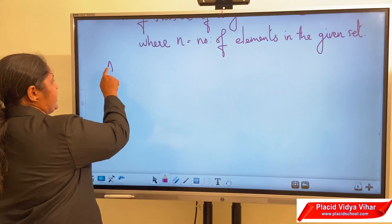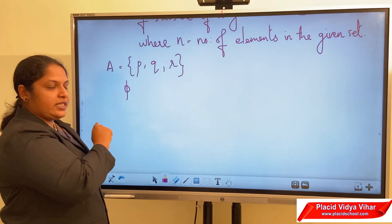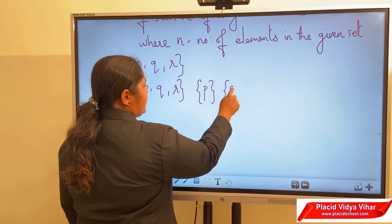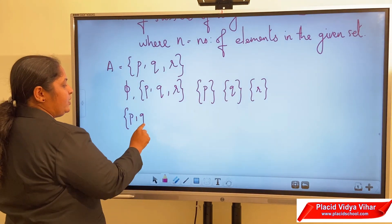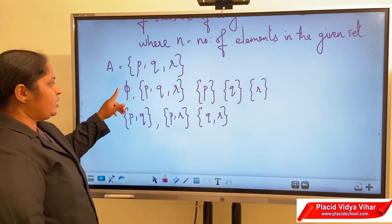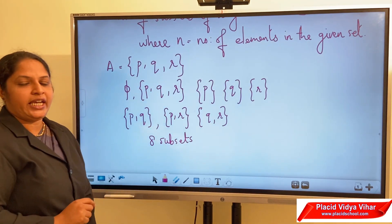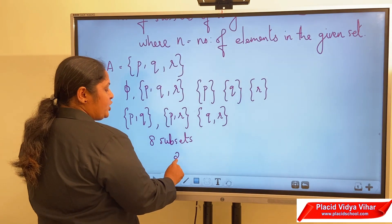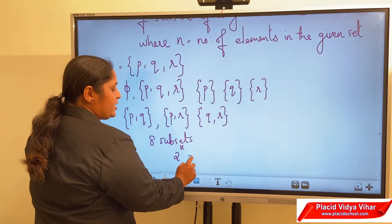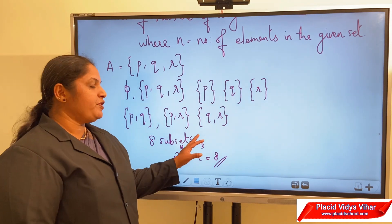Let us consider another example: A = {P, Q, R}. The subsets are: null set, the set itself {P,Q,R}, individual elements {P}, {Q}, {R}, then pairs {P,Q}, {P,R}, {Q,R}. Three elements together is already written. Count: 1, 2, 3, 4, 5, 6, 7, 8 — there are 8 subsets. According to the formula, 2 raised to 3 equals 8. That is how we find the number of subsets.